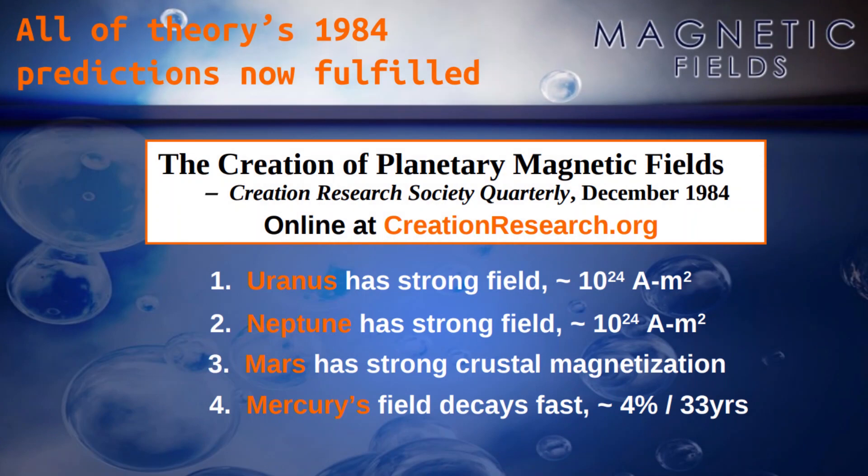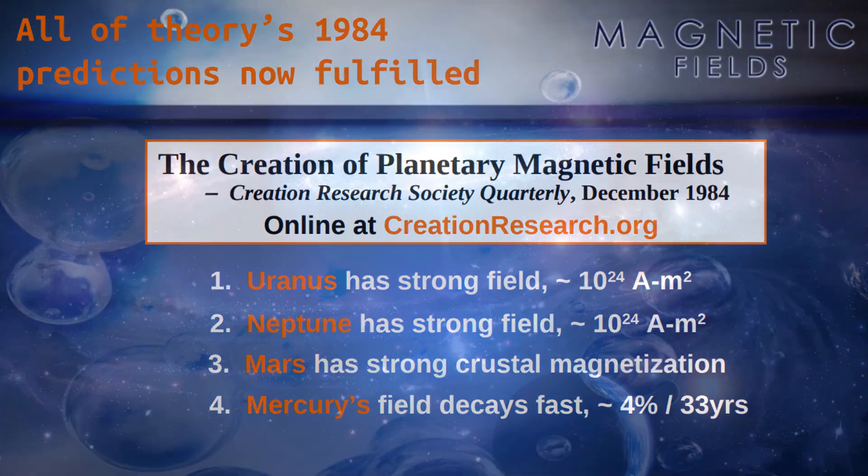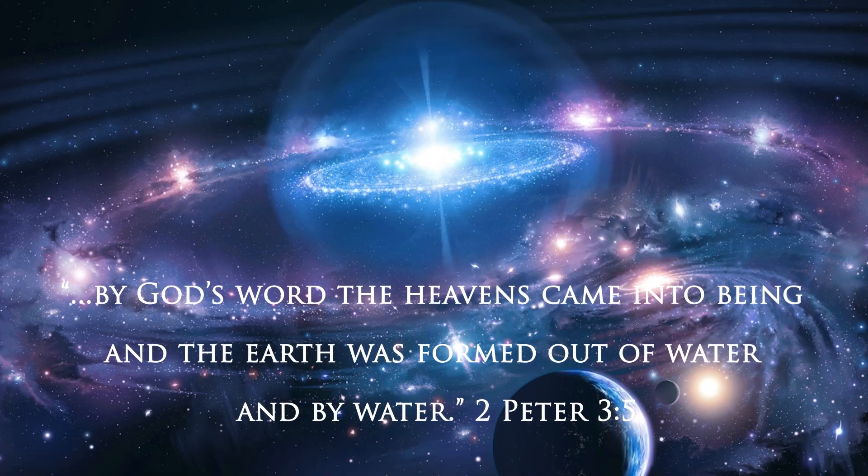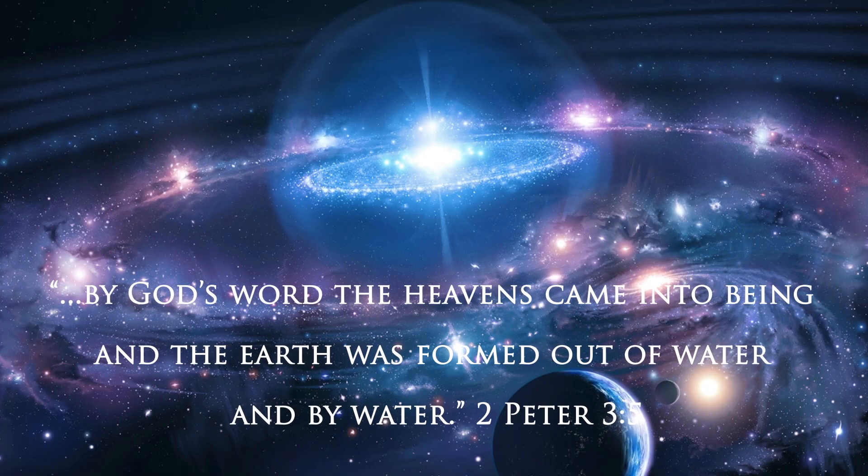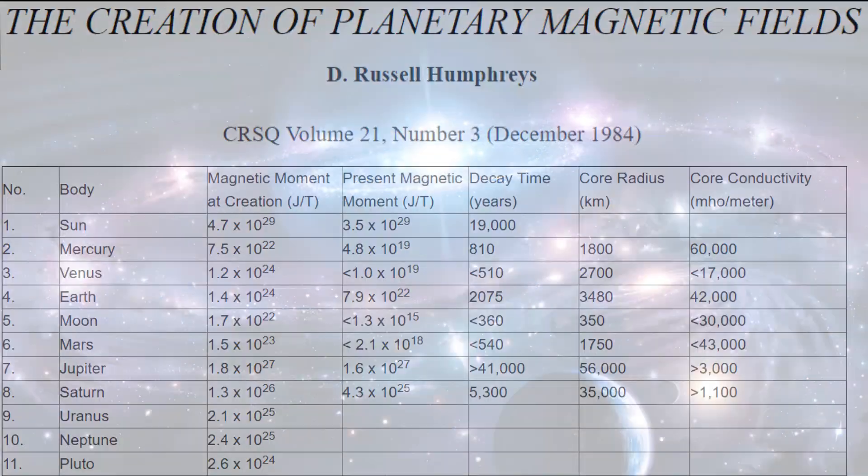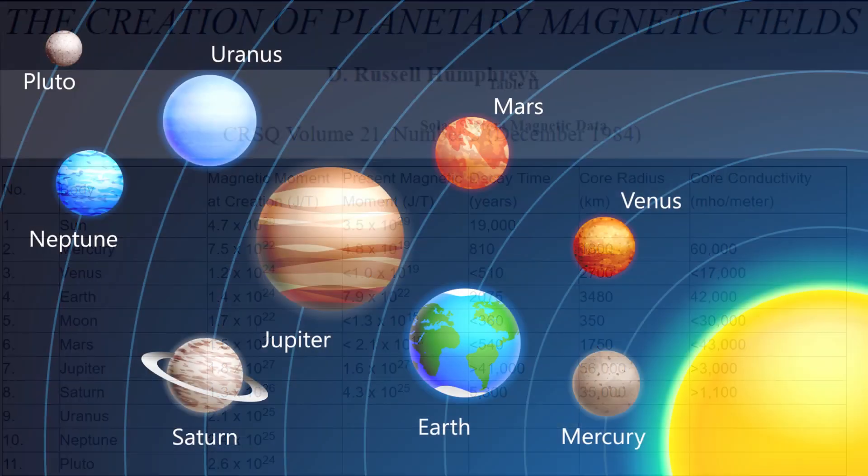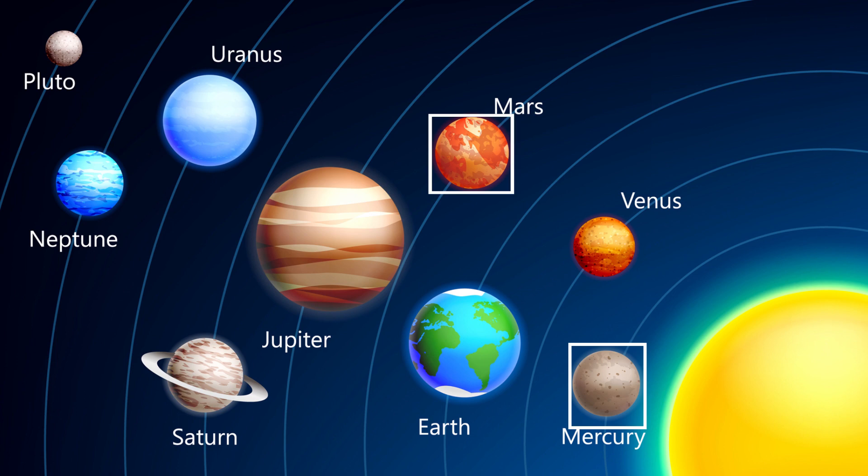In 1984, Dr. Humphreys developed a theory based on the biblical account, which says that God created the planets out of water, just thousands, not millions of years ago. Dr. Humphreys' theory was able to make several testable predictions about the magnetic fields of Mercury, Mars, Uranus, Neptune, and Pluto.